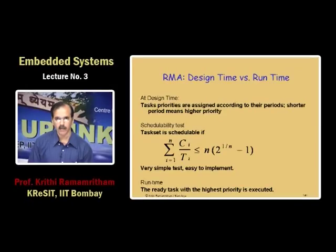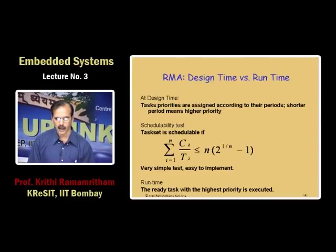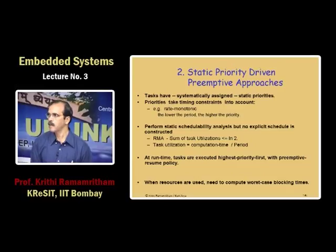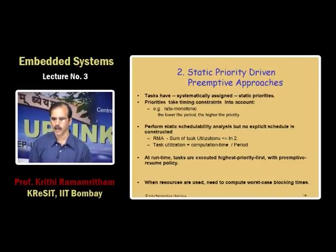The natural log of 2 comes from the Liu and Layland formula: the sum of C_i over T_i should be less than n times (2 raised to 1/n minus 1). For very large n, this reduces to 0.69. The test is simple and gives you a priority assignment followed by a yes or no answer. At runtime, tasks are executed highest priority first with preemptive resume policy — always running the highest priority task. If a higher priority task arrives, the current task is preempted, the higher priority task runs, and when finished the original task resumes.